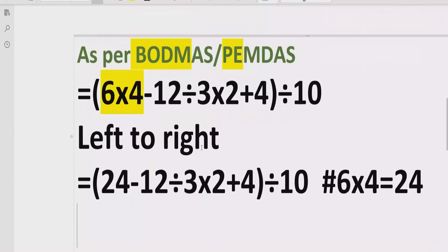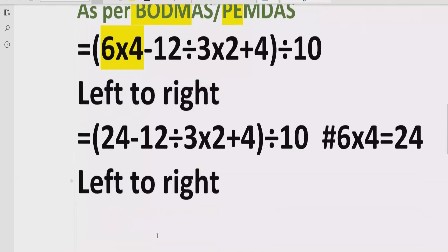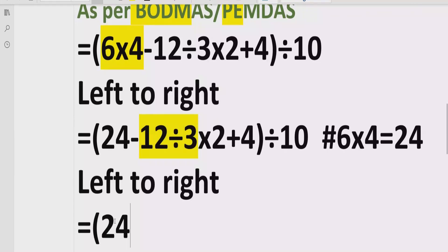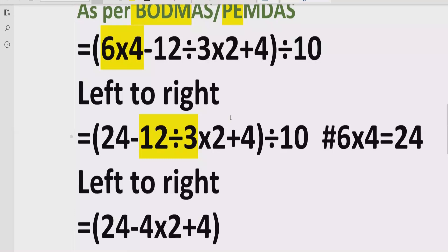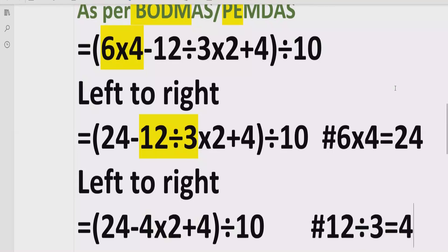Now we go left to right again to find the next division or multiplication. We have 12 divided by 3. So we write: 24 minus 4 multiplied by 2 plus 4, divided by 10, as it is. Reference: 12 ÷ 3 = 4.